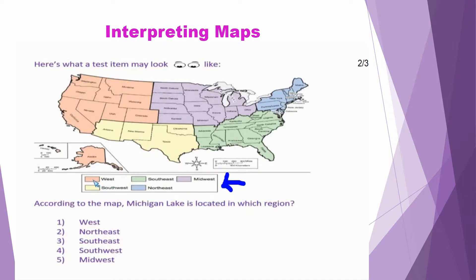When we look at the color pale, we see that this region here, according to our map key, indicates the west region. When we look at yellow and we go to our map here, we see that this region here is our Southwest. When we look at green, which is here, we see that this region is our Southeast. When we look at blue, which is here, we see that this region is our Northeast. And when we look at purple, according to our map key, we see that this region is the Midwest.